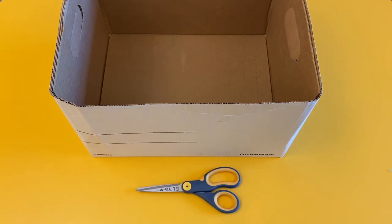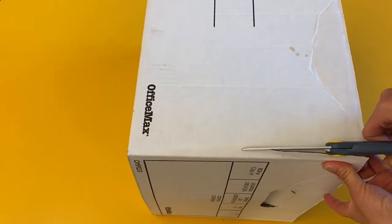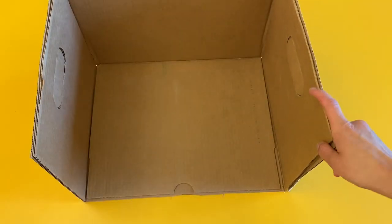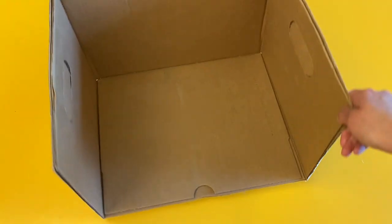Now we're gonna work on designing the set for your movie. The first thing I'm gonna do is cut one of the long sides of the box. Your box should look like this when you're done cutting. This is a set where all the magic is gonna happen.